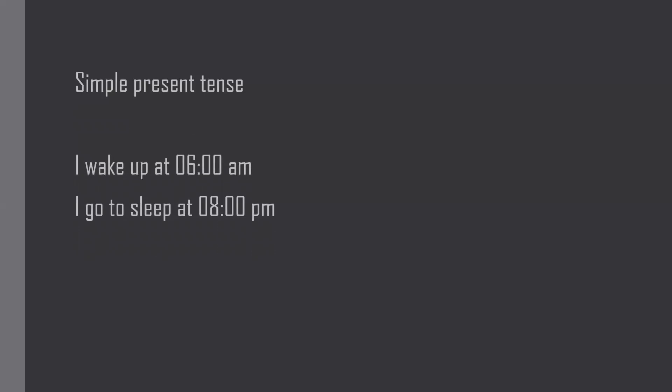Another example: 'I wake up at 6 AM, I go to sleep at 8 PM.' These are routine or habitual actions — every day you wake up, have breakfast, go to work, and play. When you want to express routine or habitual actions, you use simple present tense. So simple present tense is used to express permanent actions and also habitual or routine actions.